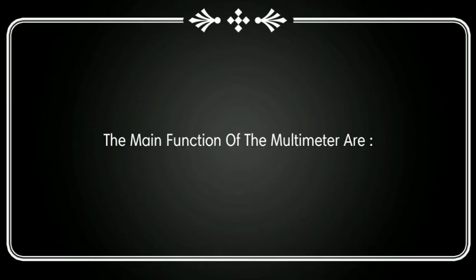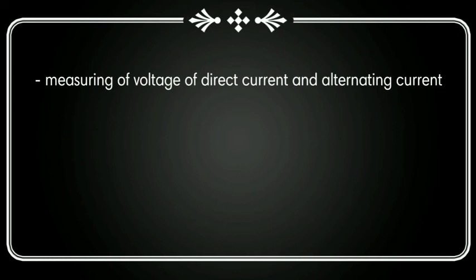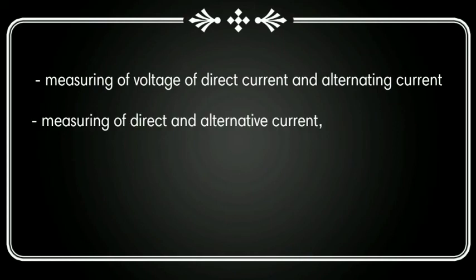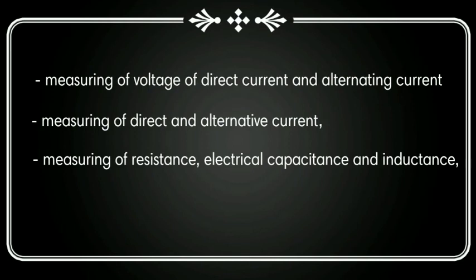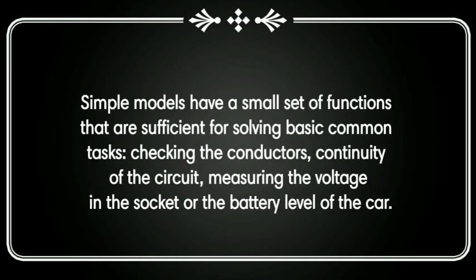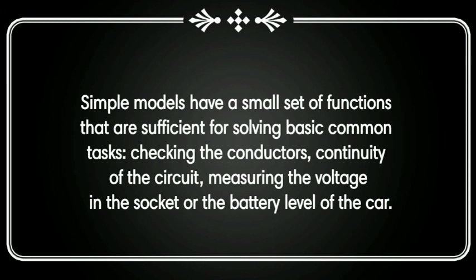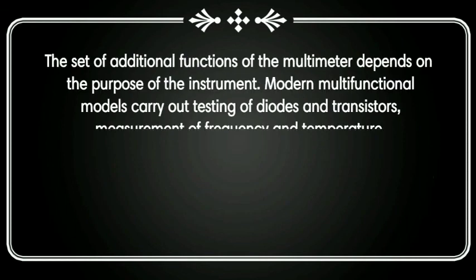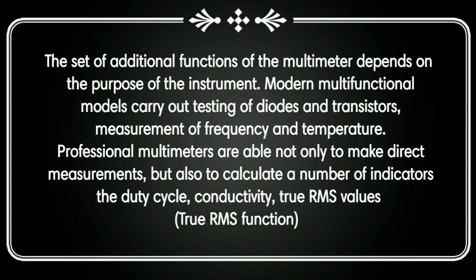The main functions of a multimeter are measuring voltage of direct current or alternating current, measuring resistance, electrical capacitance, and inductance. A simple model has a small set of functions sufficient for basic tasks such as checking conductor continuity of the circuit, and measuring voltage in a socket or the battery level of a car.